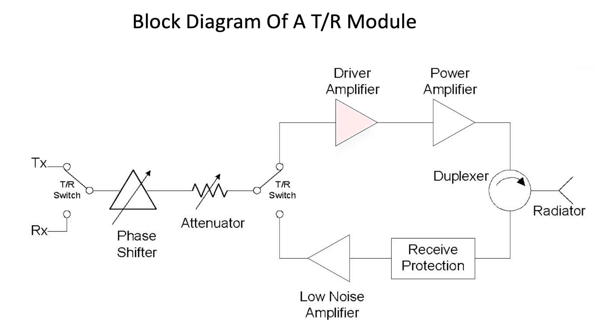It performs the transmit functions — the T part of TR module stands for transmit. The transmit receive modules have in the transmit portion a very high power amplifier. Those may be made of gallium nitride, gallium arsenide, or even silicon germanium semiconductor materials, and those high power amplifiers are responsible for amplifying the level of the signal being sent out of the array to the required level for the system.